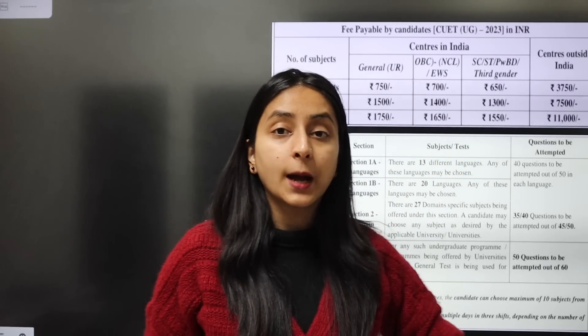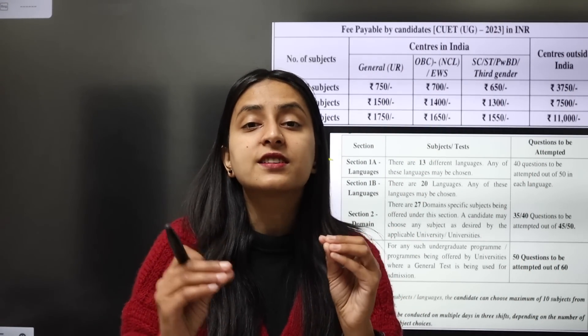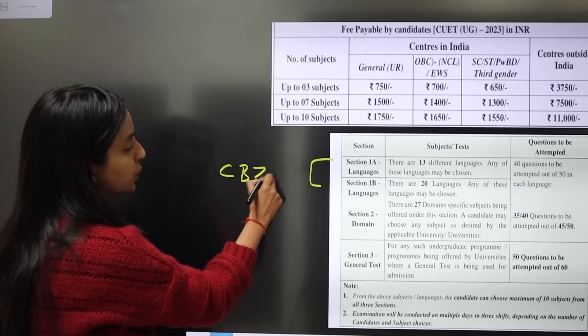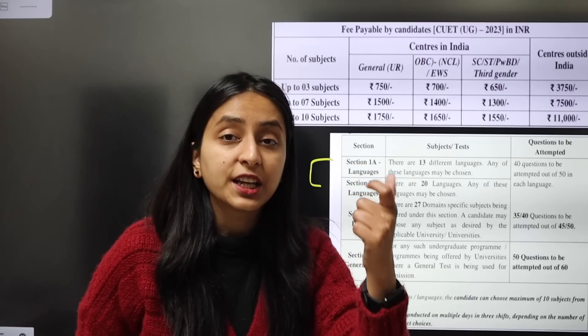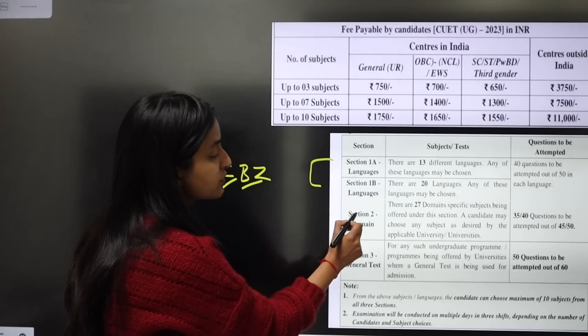The second section is your main domain paper, where you will give a subject exam based on the Class 12 syllabus — whichever subjects are relevant to the program you are applying for. For example, if you are thinking of a simple BSc, which includes Chemistry, Botany, and Zoology, you will fill the CUET form and give papers in Chemistry, Botany, and Zoology.